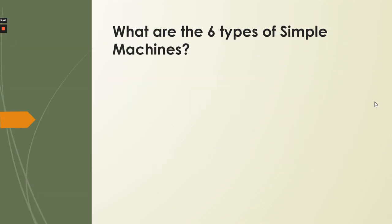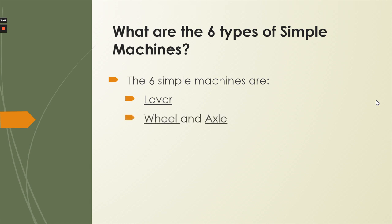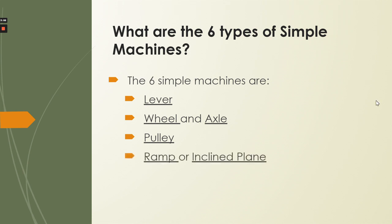Our six types of simple machines are: a lever, a wheel and axle, a pulley, a ramp or inclined plane, a wedge, and a screw. Those are our six types of simple machines.